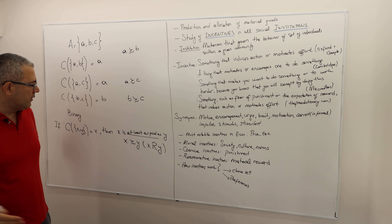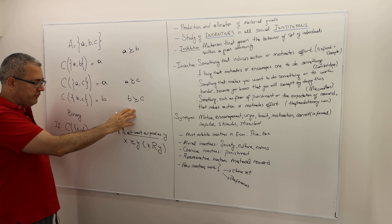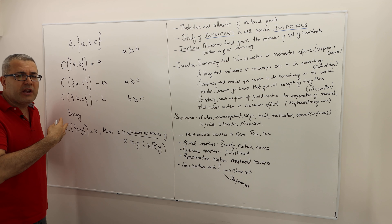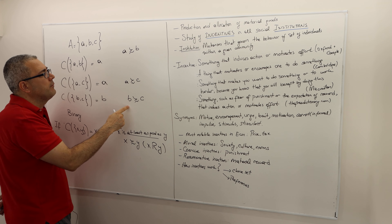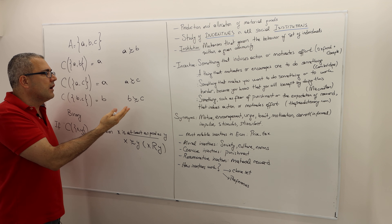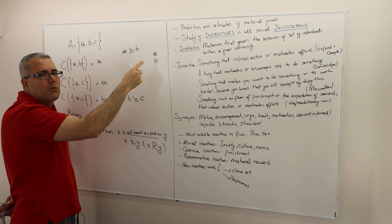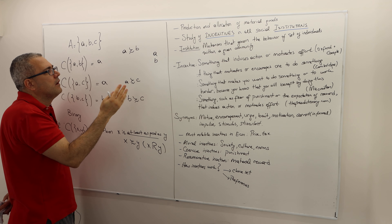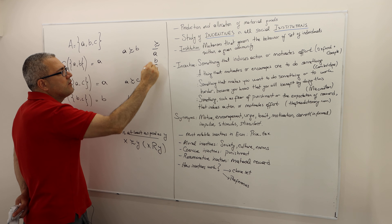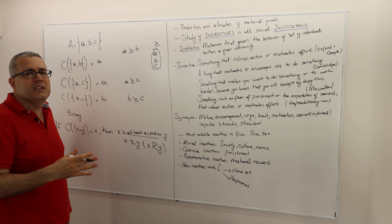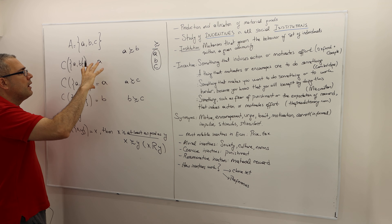This binary relation is complete and transitive. Transitivity means you can actually rank those alternatives. This individual thinks a is at least as good as b, b is at least as good as c, and a is at least as good as c. So we can rank them: a is the top choice, b is the second best, and c is the worst alternative.